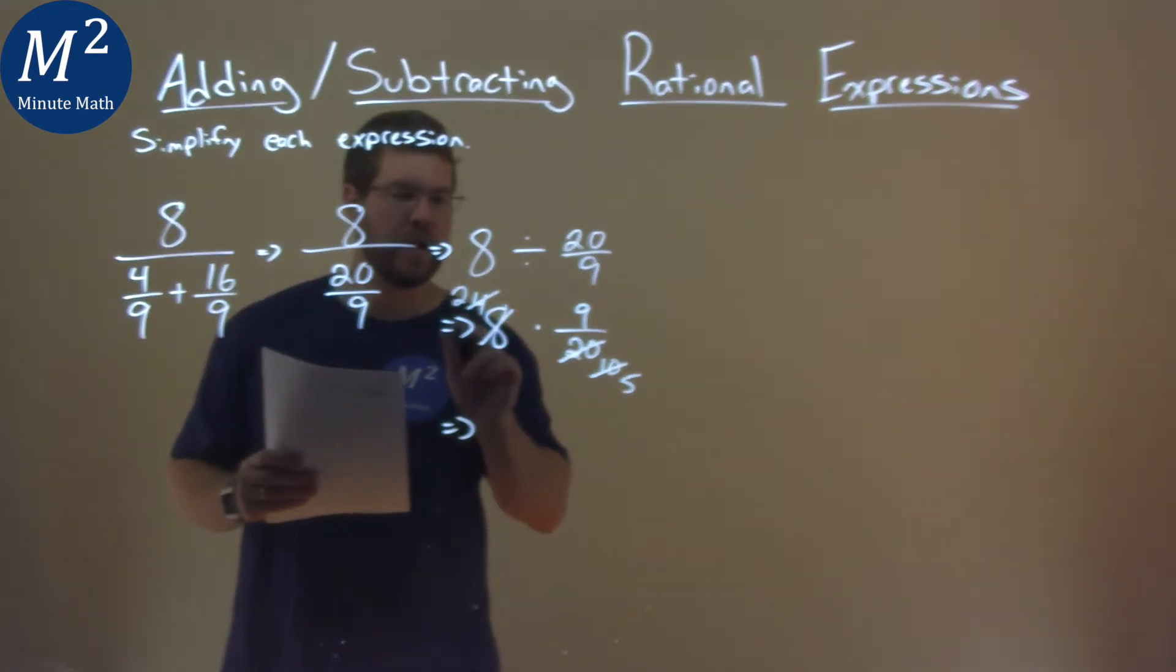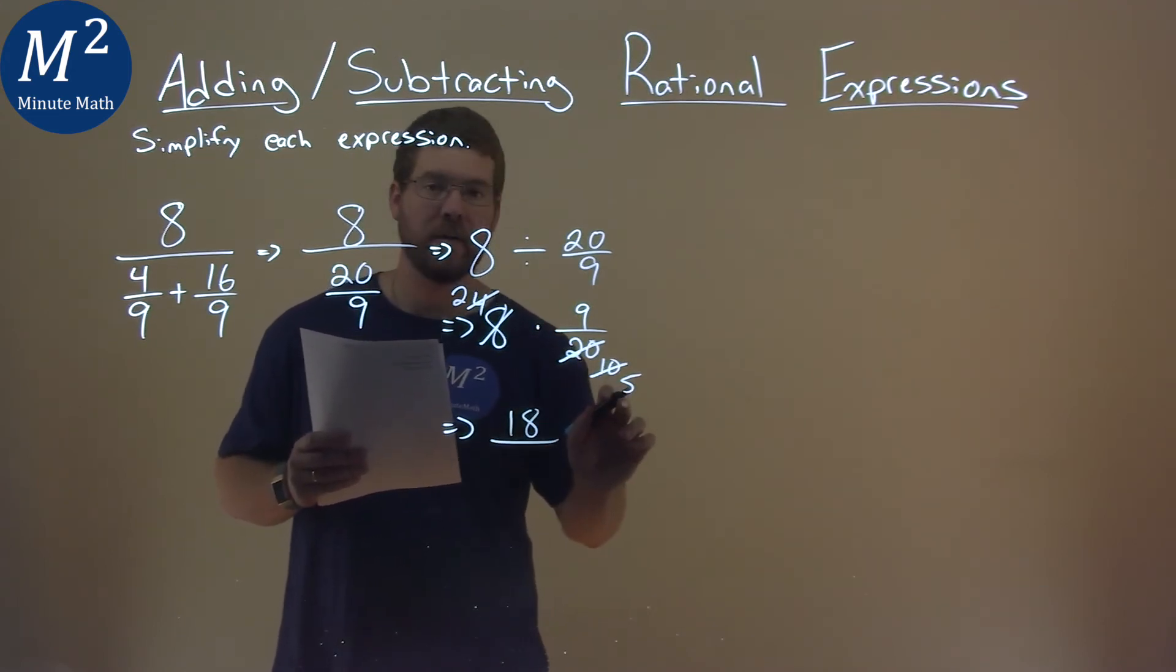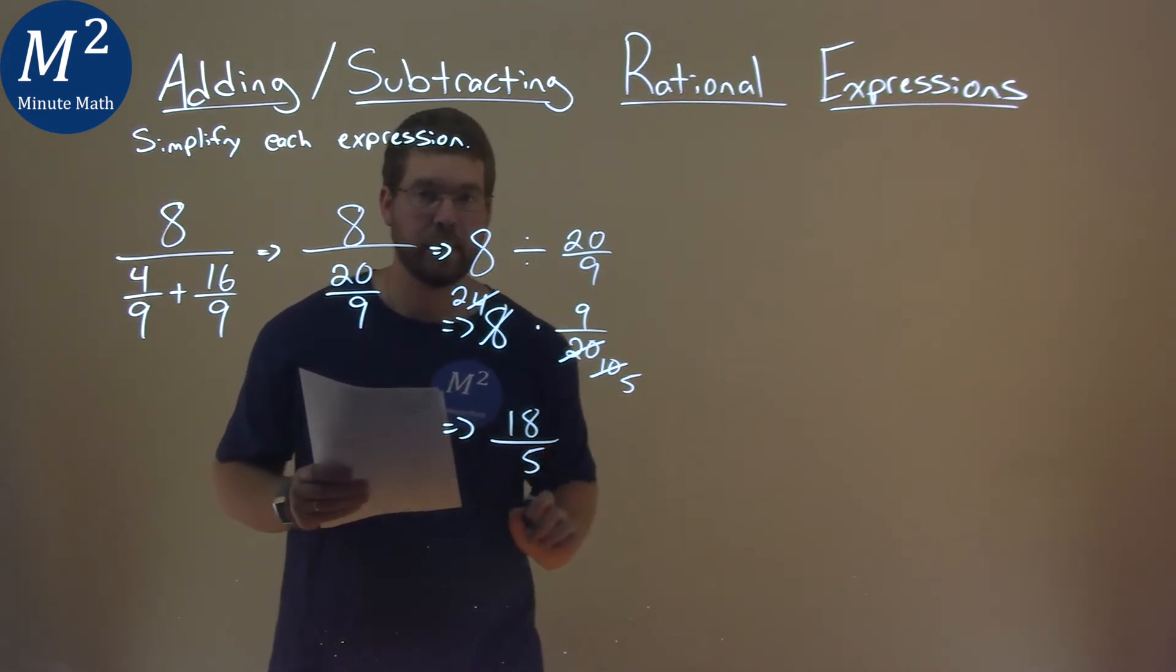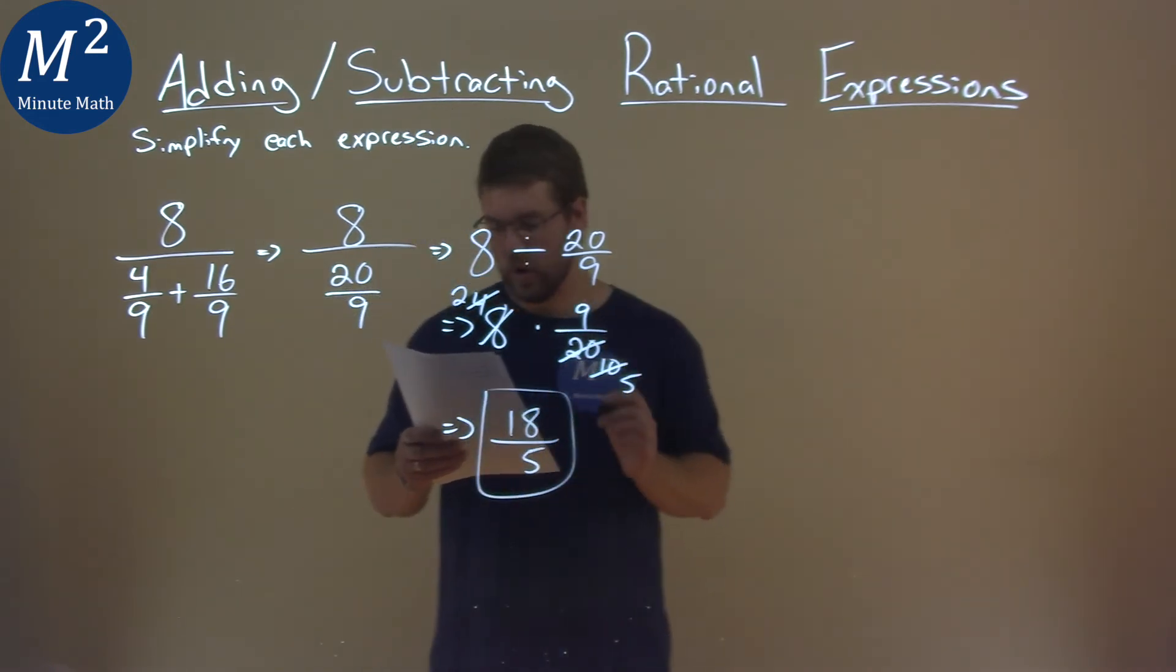So now we simplify that out, 2 times 9 is 18, and we still have 5 in the denominator. And so our final answer here is just 18 over 5.